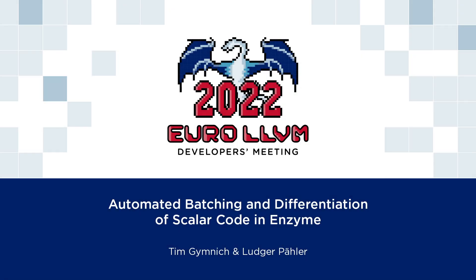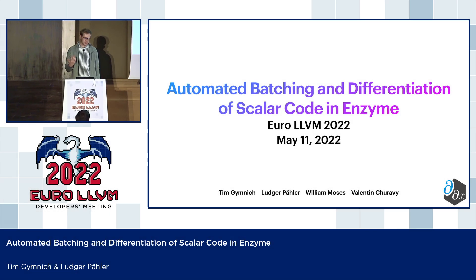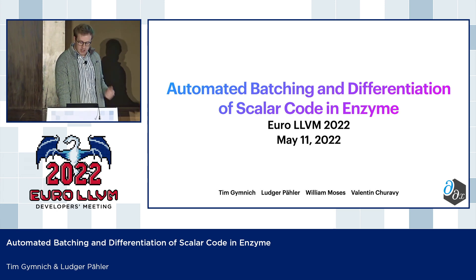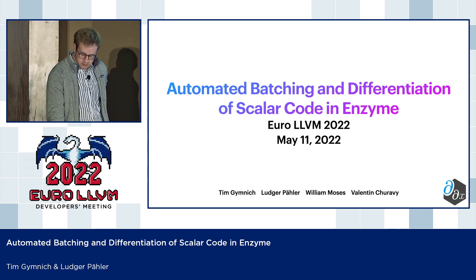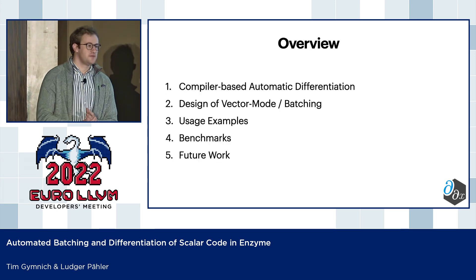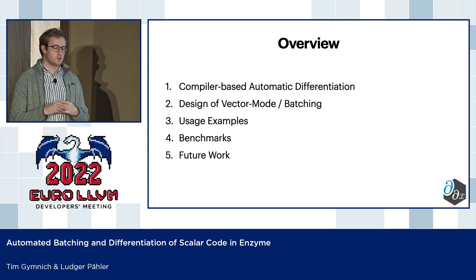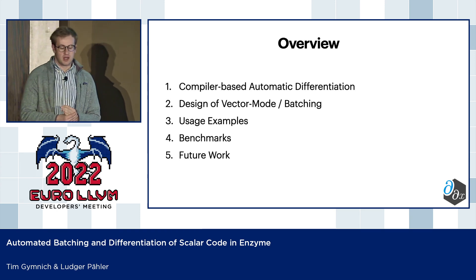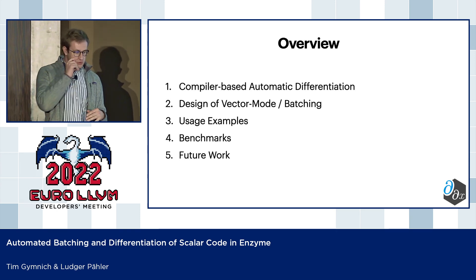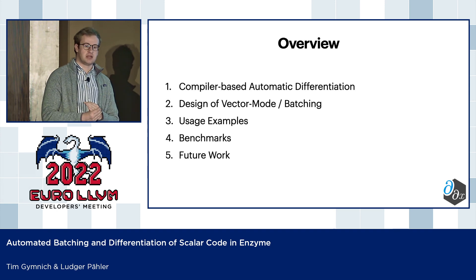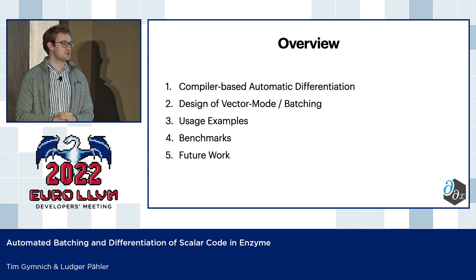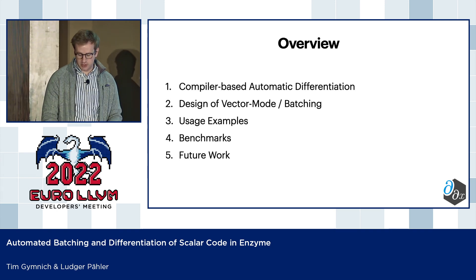Hello, I'm Lutke at the Stim, and we're basically presenting an extension to Enzyme, which is the tool to take derivatives at the LLVM IR level. We'll first start off by doing a brief overview of what compiler-based automatic differentiation does and how it works, then move on to how vector mode and batching enabled by LLVM works, with a few examples, present a few benchmarks, and then talk about future work.